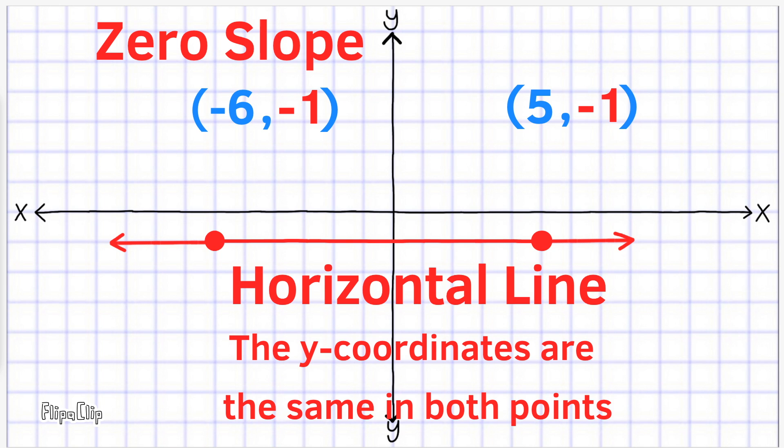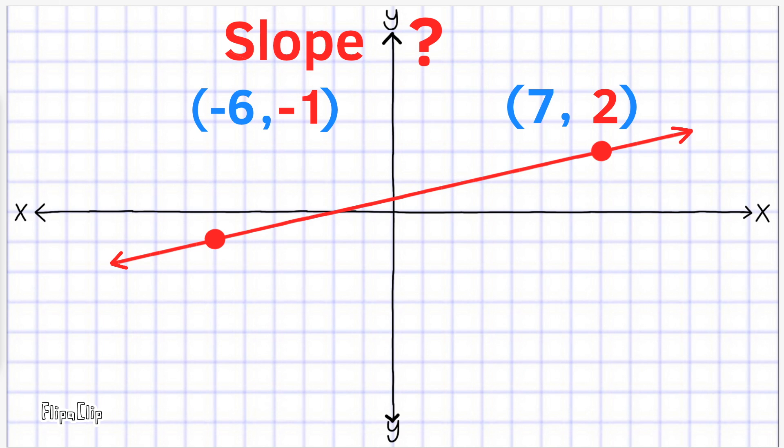Let's see what the ordered pairs and the line look like when it's not horizontal. Take a look at the y coordinates in both sets of ordered pairs. What do you notice? They're not the same.